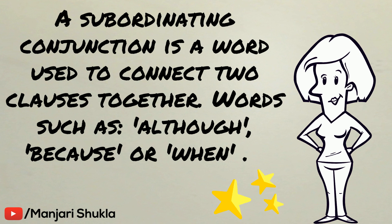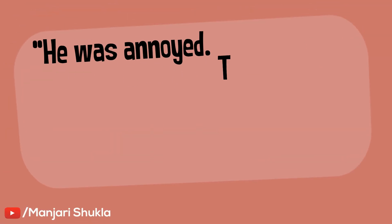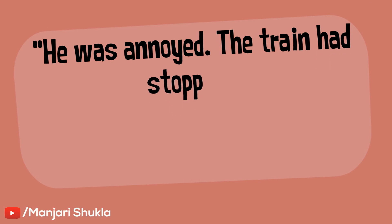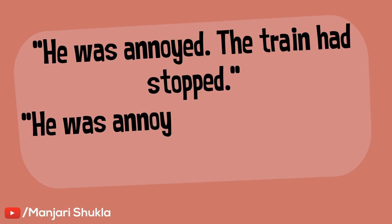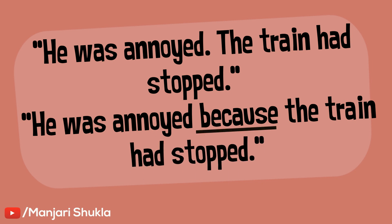So now let's see an example. Example: 'He was annoyed. The train had stopped.' Now when we add a subordinating conjunction: 'He was annoyed because the train had stopped.' So by using the conjunction 'because', we joined the two clauses together.